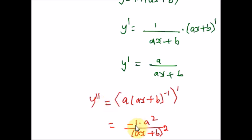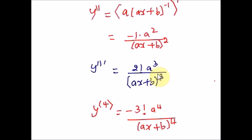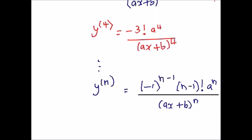For the second derivative it will be minus 1 factorial; for the third derivative, 2 factorial; for the fourth derivative, negative 3 factorial in the numerator. The signs alternate, and the factorial increases. We can easily detect the common pattern. So the nth derivative is given by — here are the third and fourth derivatives — and the nth derivative generalizes the pattern from these.